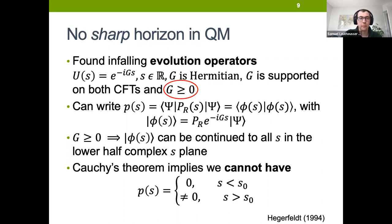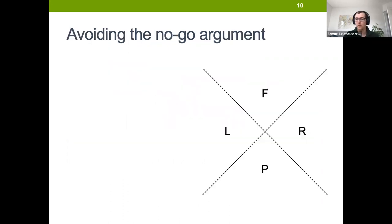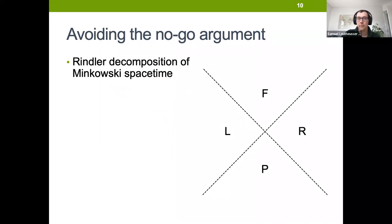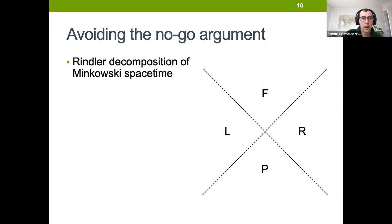Of course we know there should be this bulk geometry with a sharp horizon, so we have to ask how we avoid this no-go argument. A clue comes from normal quantum field theory in Minkowski spacetime. Consider a Rindler decomposition of Minkowski spacetime, with a left wedge, right wedge, future wedge, and past wedge. This thermofield double case is very similar to the Minkowski vacuum if we put it on a lattice — the Minkowski vacuum state is just like a thermofield double state for those degrees of freedom.